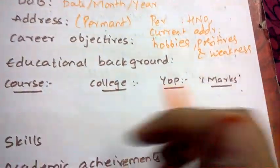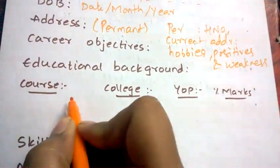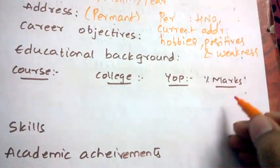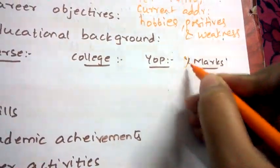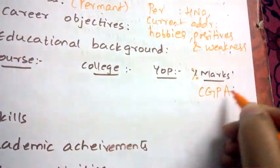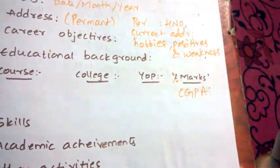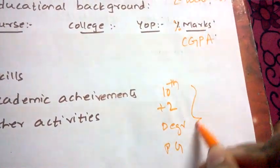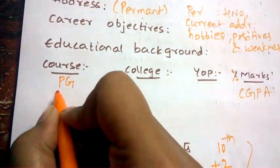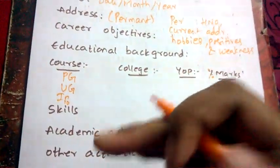Next, mention your educational background. The format should be: course, name of college, year of passing, and marks or CGPA. Many students make the mistake of starting from 10th, then Plus 2, then degree — that's the wrong order. You should mention in decremental order: first PG, then UG, then intermediate, then 10th.